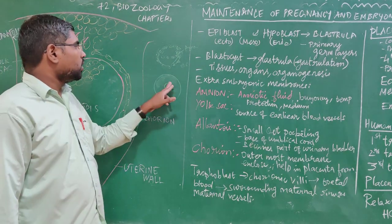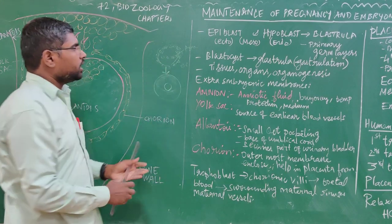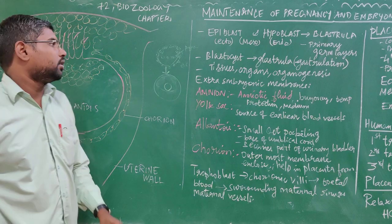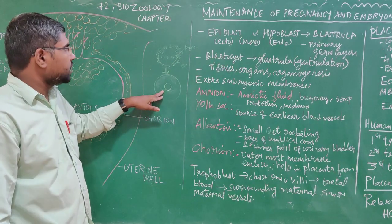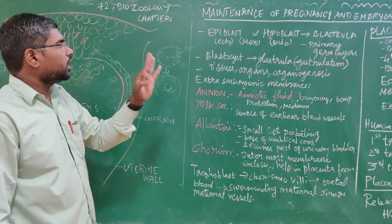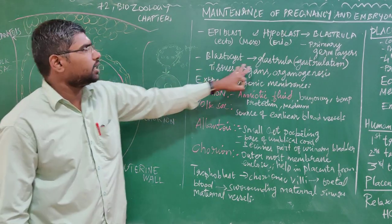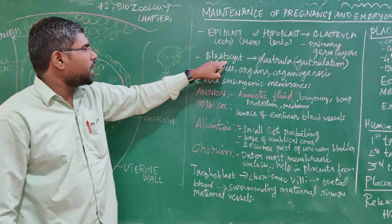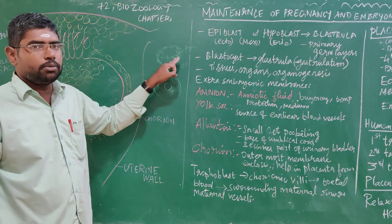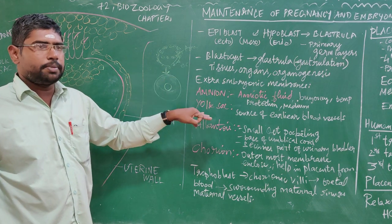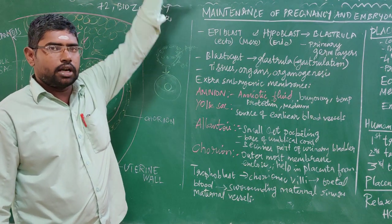Now, if there are 3 layers, it is called a blastula. The blastula is formed with 3 layers — ectoderm, mesoderm, and endoderm — and it is then formed into a gastrula. The formation of blastocyst to gastrula is called gastrulation.